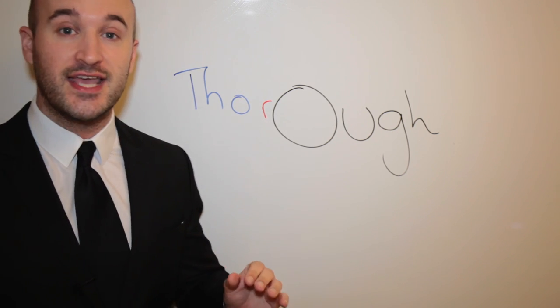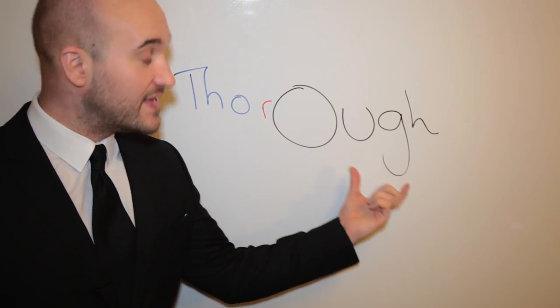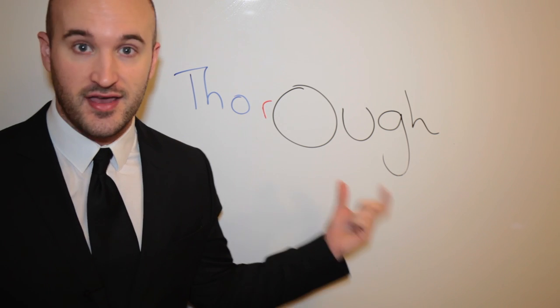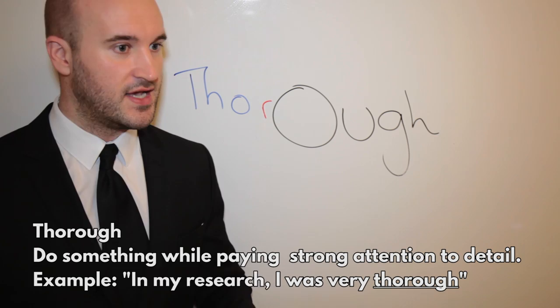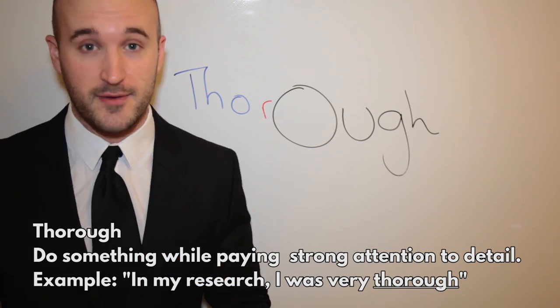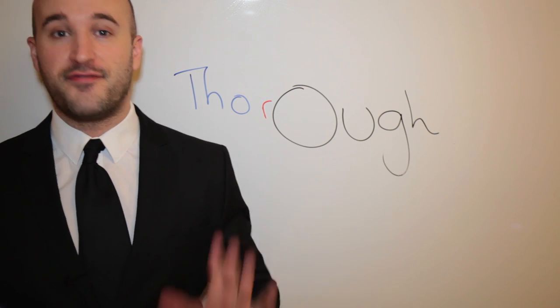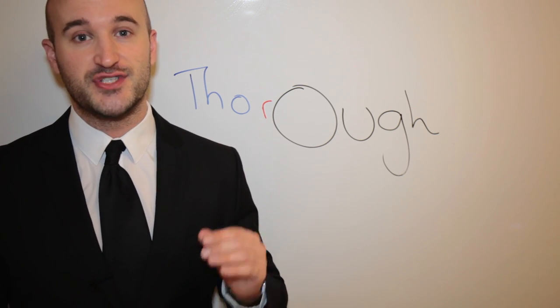Put a THO at the beginning and we've got thorough. So in this case it sounds like ah, thuh-ruh. Thorough. In my research, I was very thorough. So there you have all of the five ways to pronounce the O-U-G.